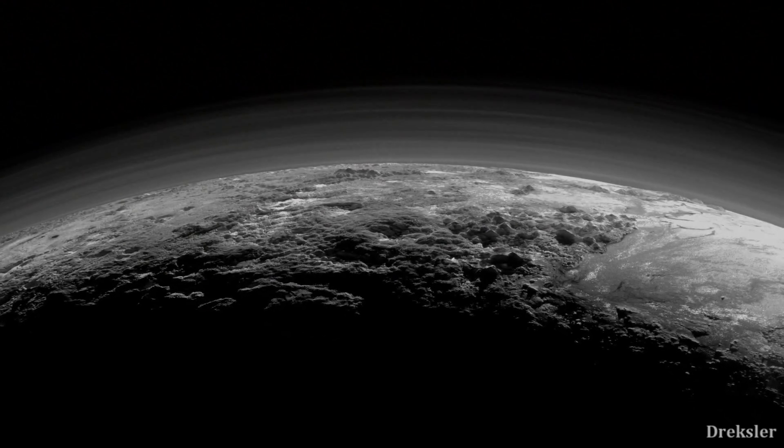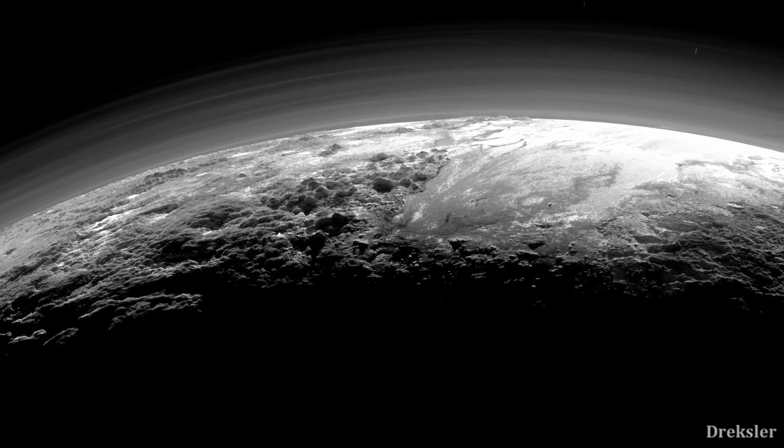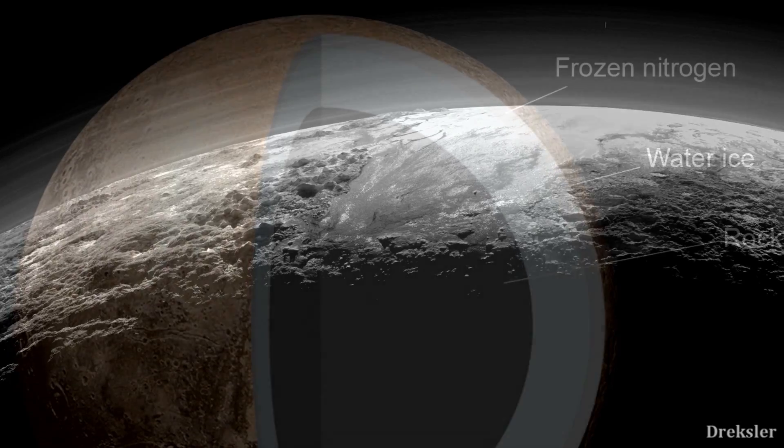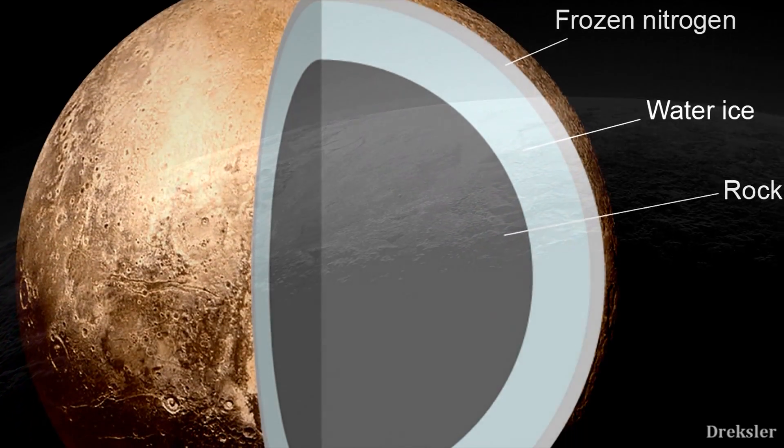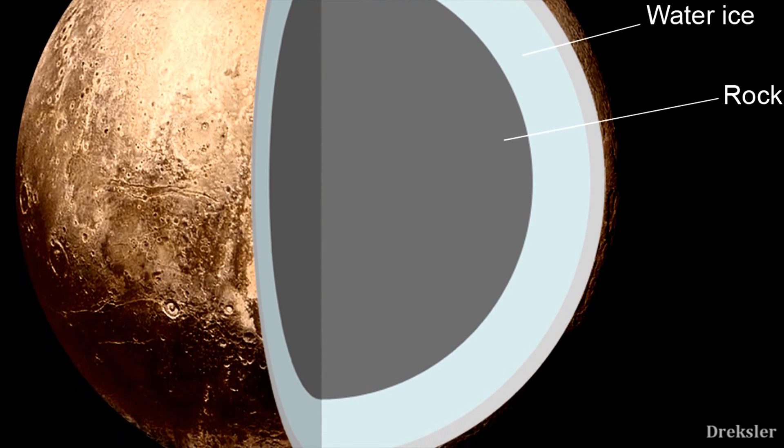And the last one is Pluto. The surface is mostly nitrogen ice with some mountains consisting of water ice. But that is just the surface. The density tells us that there is a water layer underneath all that. We just don't know in which state that water is.